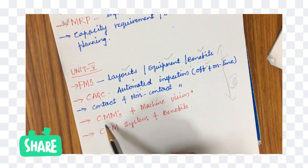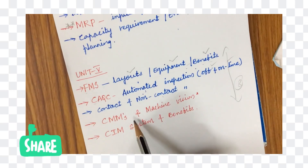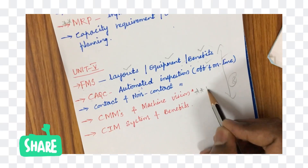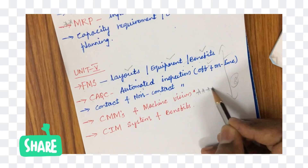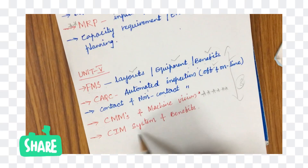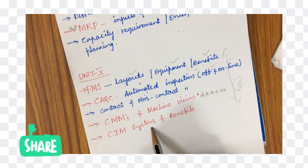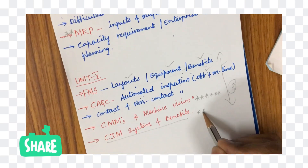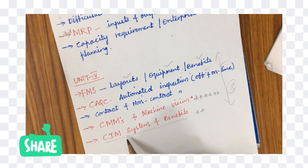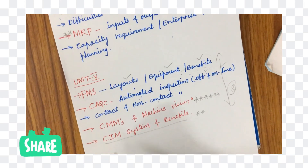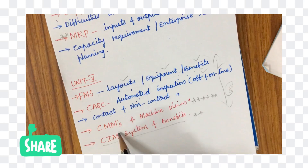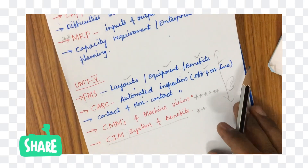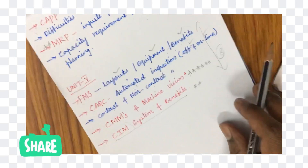Coordinate measuring machine is asked several times — its types — and machine vision is one of the most expected questions for this semester. Computer integrated manufacturing system and its benefits is the last topic in CAD CAM, where CIM is nothing but CAD plus CAM combined into computer integrated manufacturing.